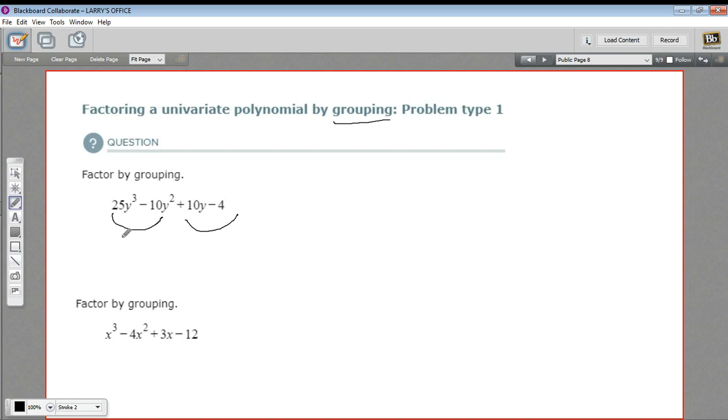So let's look at these first two terms here. What can I factor out that they have in common? It looks like a 5 for a number and a y squared. So let's factor out 5y squared from that first two term chunk here. 25 divided by 5 is 5, and y cubed divided by y squared is y, so that leaves a 5y. And then negative 10y squared, so that'd be a negative 2. So I factored 5y squared out of this first two terms.